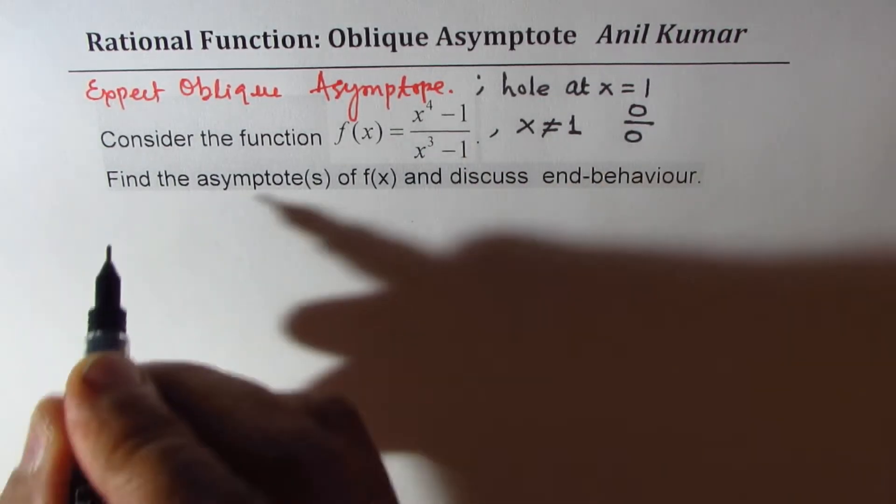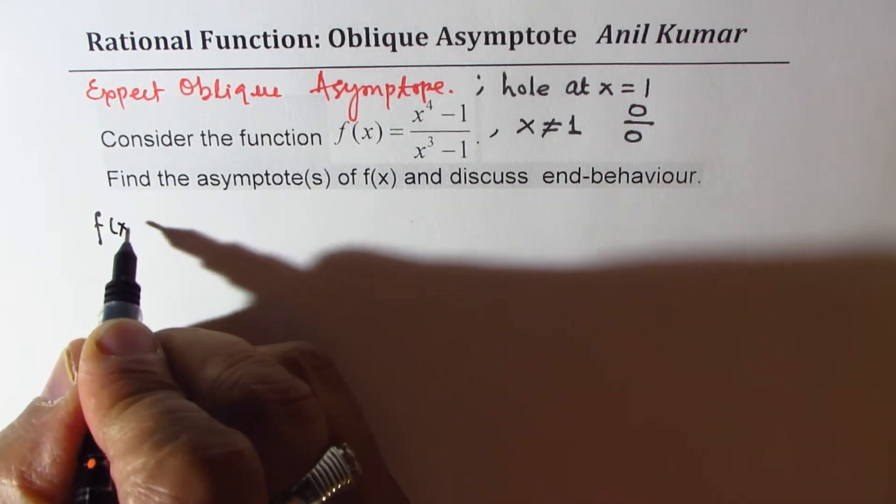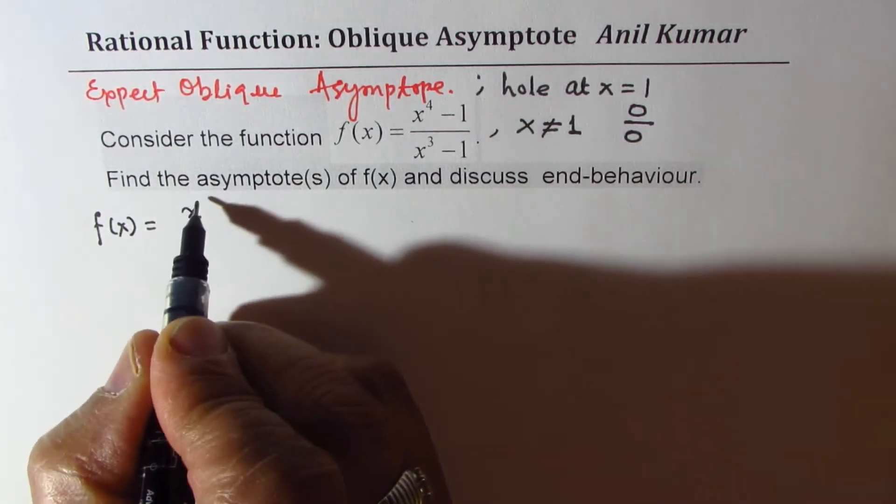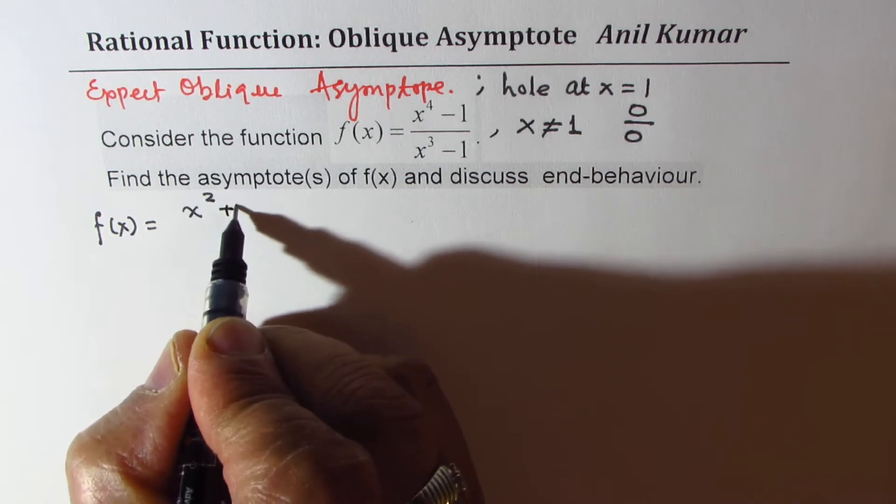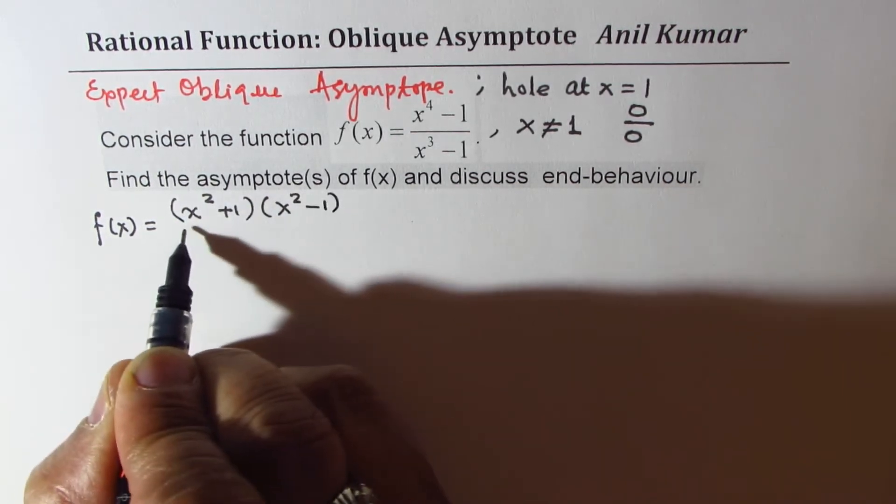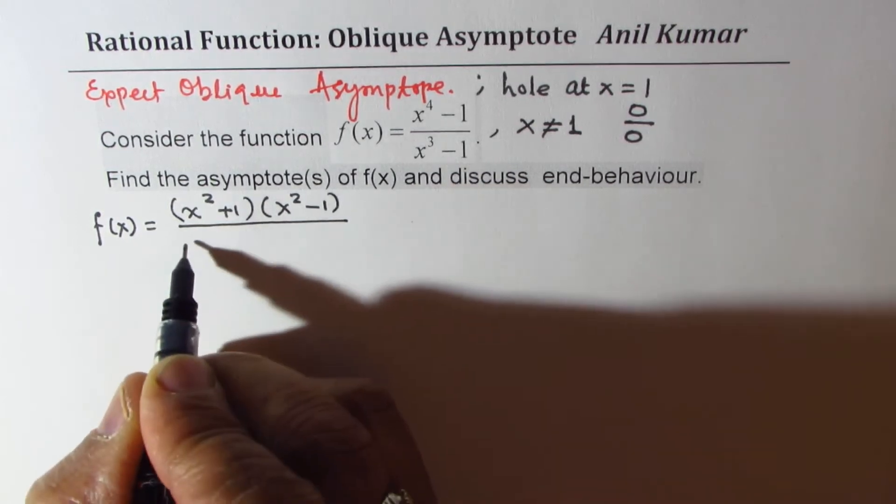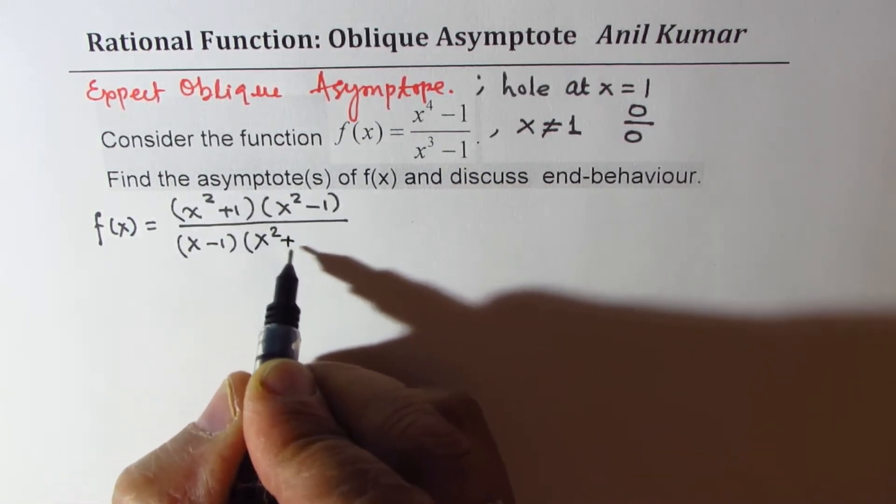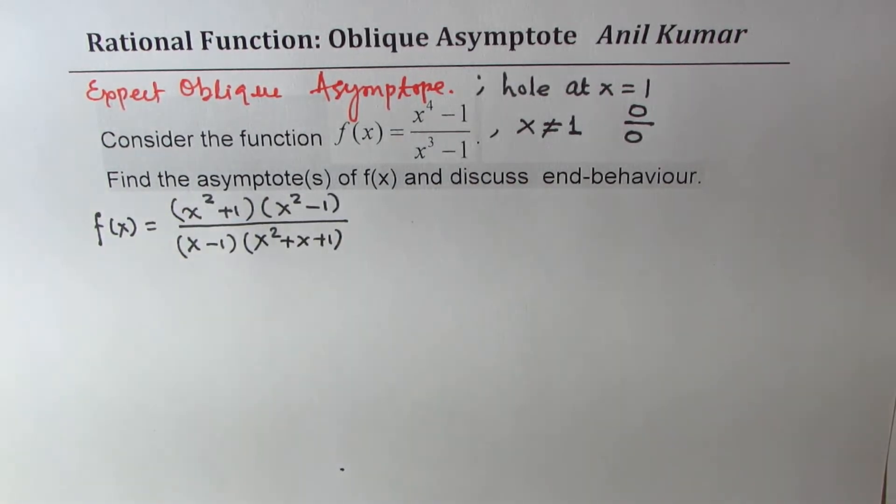f(x), which is given to us as x to the power of 4, we could write this as x squared plus 1 times x squared minus 1. The denominator could be written as x minus 1 times x squared plus x plus 1. So I applied the formula of a cube minus b cube.